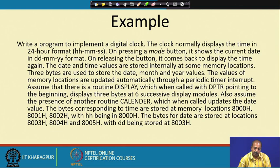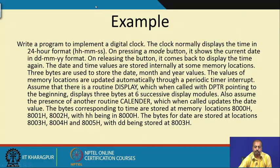The bytes corresponding to the time are stored at locations 8000, 8001, and 8002: HH is at 8000, MM is at 8001, SS is at 8002. The bytes corresponding to the date DDMMYY are at 8003, 8004, and 8005. Now let us see how to design this particular program.